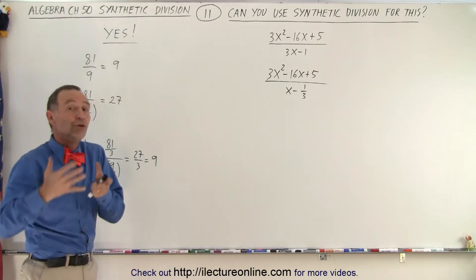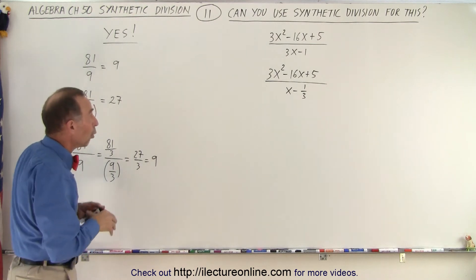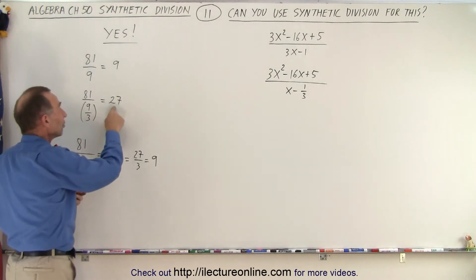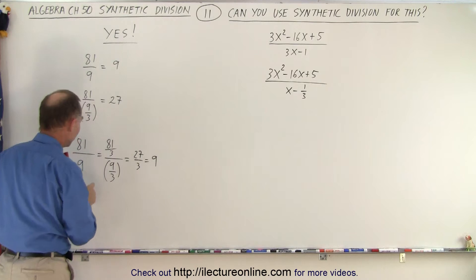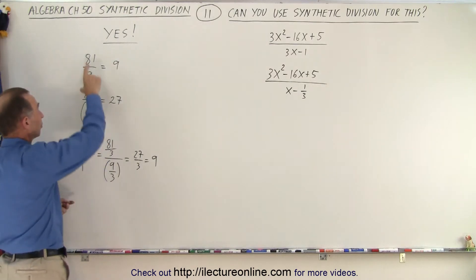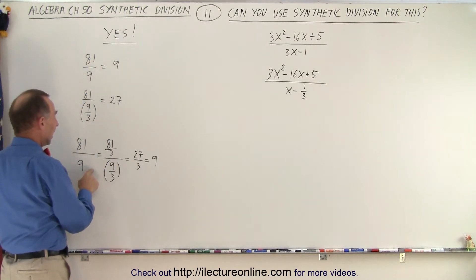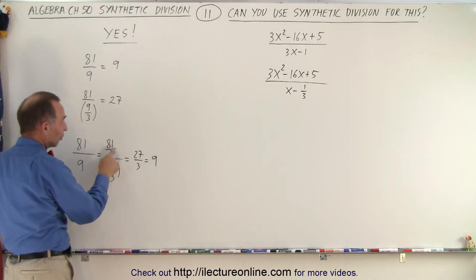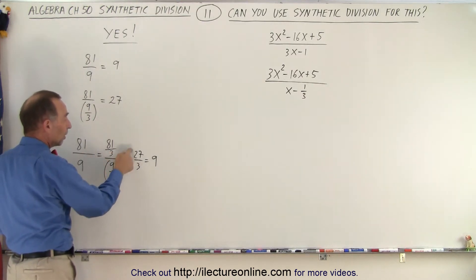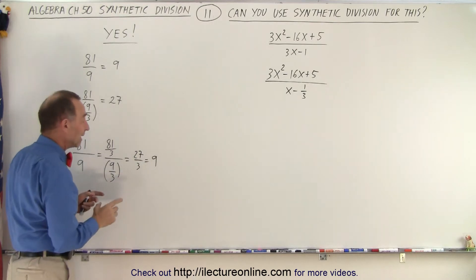So essentially, I need to divide the numerator by 3 as well. Or, I could take the answer and divide it by 3. In other words, if I take 81 divided by 9, which is what I have over here, and I imagine that I divide the denominator by 3, which means I divide the numerator by 3, I end up with 27 divided by 3, which gives me 9 again.